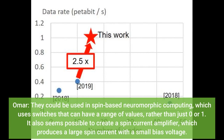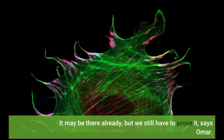Omar notes they could be used in spin-based neuromorphic computing, which uses switches that can have a range of values rather than just zero or one. It also seems possible to create a spin current amplifier, which produces a large spin current with a small bias voltage. It may be there already, but we still have to prove it, says Omar.